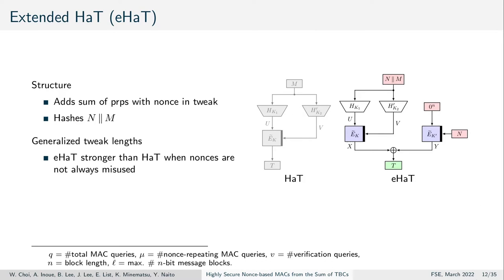Our second proposal is called extended hash-as-tweak. It adds the result of processing the nonce with an independent tweakable block cipher call to hash-as-tweak. Furthermore, it concatenates and hashes the nonce and the message instead of only the message. For generalized tweak length, our construction will be stronger than HAT when nonces are not always misused, so whenever u is smaller than q.